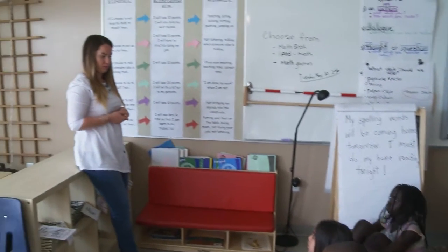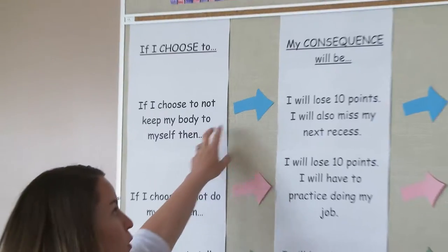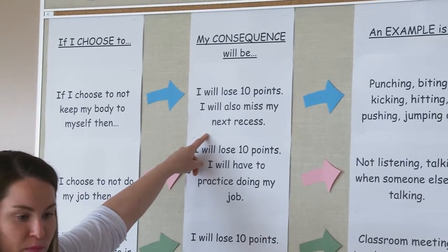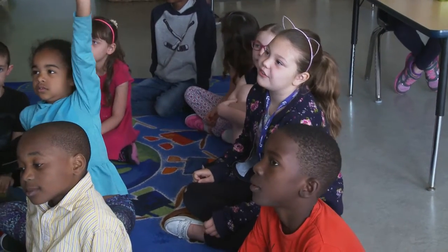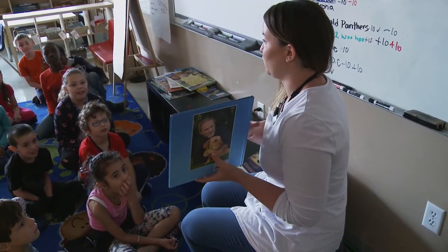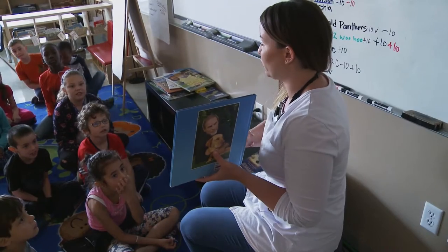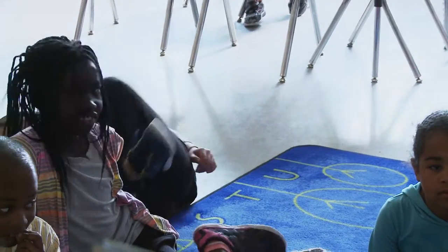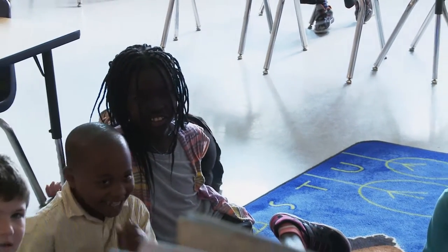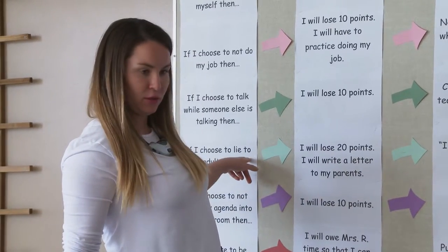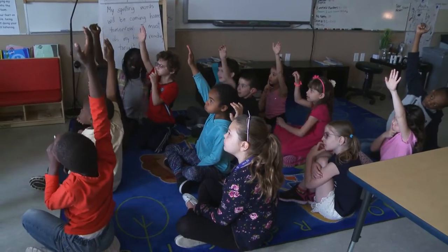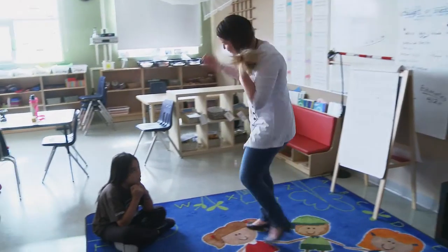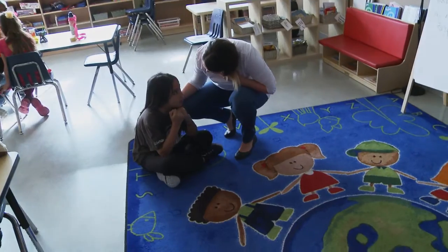Appropriate consequences means matching a consequence to a behavior that is appropriate for a given student. These consequences will be different depending on the needs of the student. For example, an appropriate consequence for a student engaging in disruptive behavior to access attention is to use planned ignoring. It is important to give a clear instruction and a warning about what the consequence will be, so that students have the opportunity to correct their behavior.